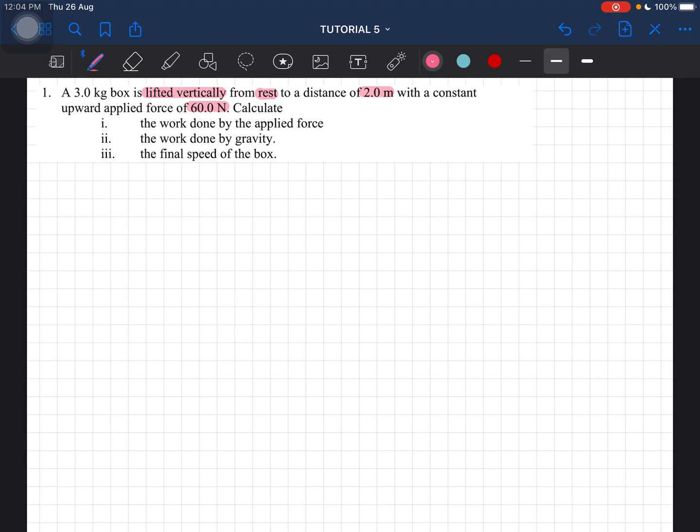The first thing we have to do is extract the information that we have. We have the mass which is 3 kilograms, and then it starts from rest so u is equal to zero, and then it is lifted to a distance of 2 meters. Since the force is going up, we have a box.